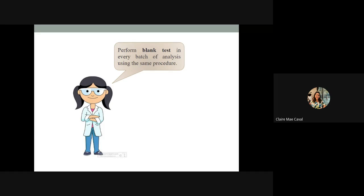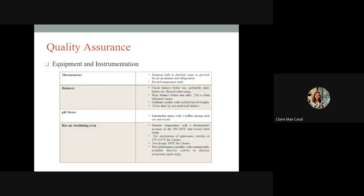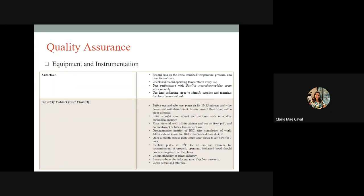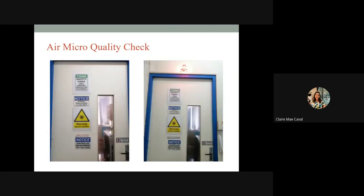For quality assurance: an air micro-quality check is performed using plate count agar to ensure the sterility of the room and equipment. The microbiology department of a water testing laboratory has a sterile room with UV light installed and a red light signal indicating when the UV light is on, to maintain room sterility.